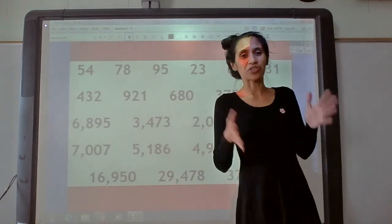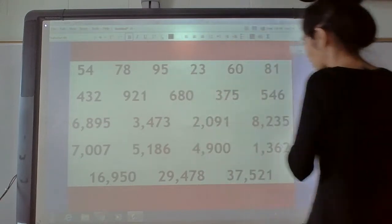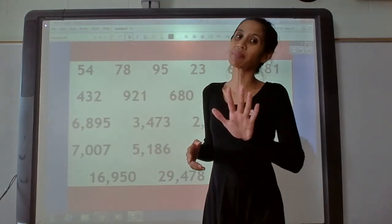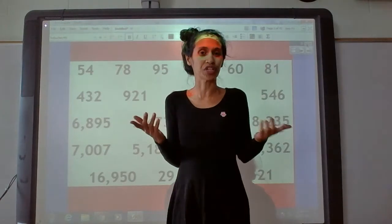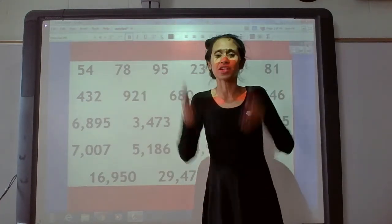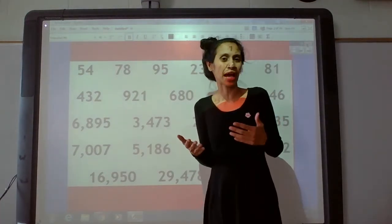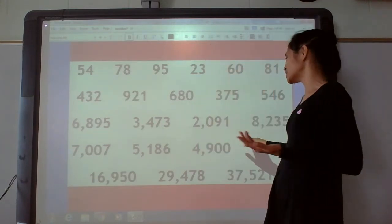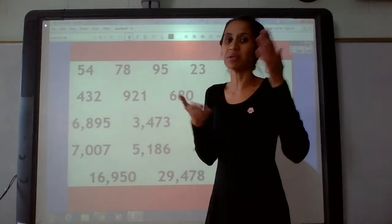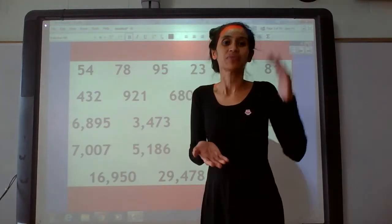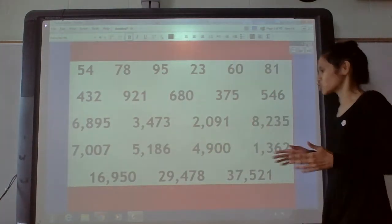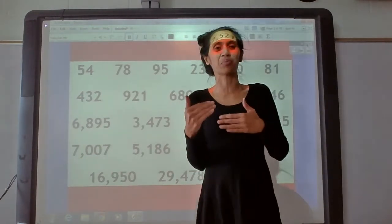I'll leave this up here — you can pause it at the end or pause it now if you want. You need to write five addition problems and five subtraction problems. For your addition problems, you can pick any two numbers. For example, you can add 23 plus 78, write that down, add it up, and check your work with a calculator. Or you can add 2,091 and 5,186. You can also add three numbers together, like 921, 546, and 29,478.